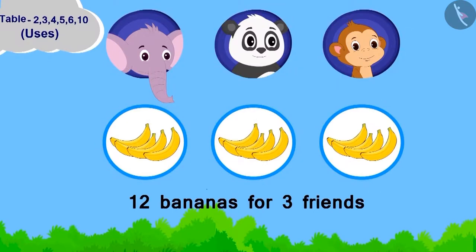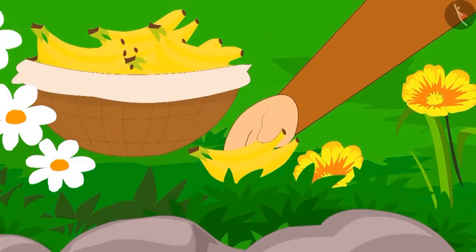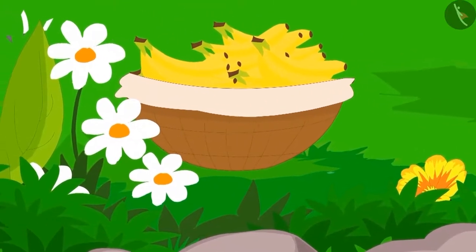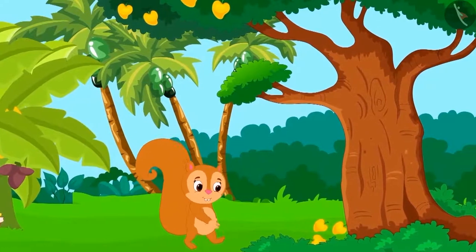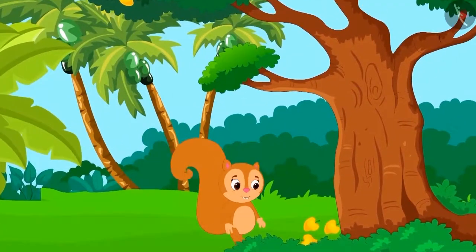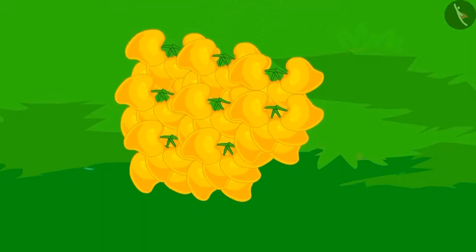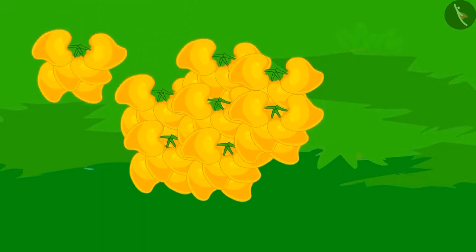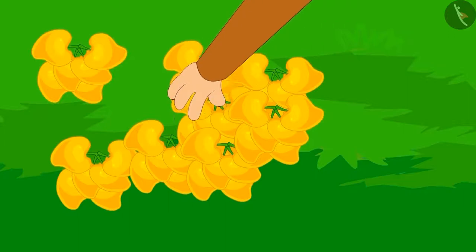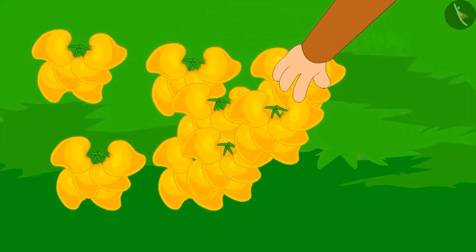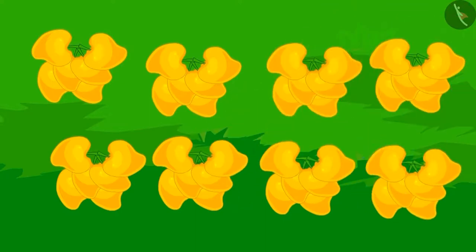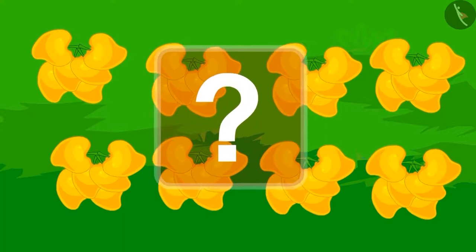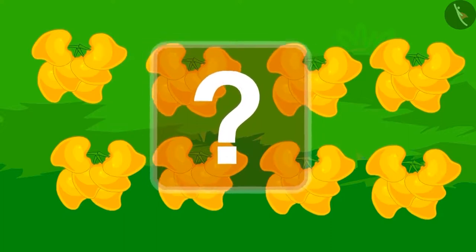Absolutely right! Chanda will have to take 12 bananas for her three friends. Chanda filled 12 bananas in a basket and started walking in her garden. She collected a lot of mangoes from her mango tree and tied them in bunches of six mangoes each. Chanda now has eight such bunches — can you tell how many mangoes Chanda collected in total?